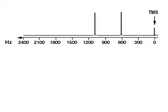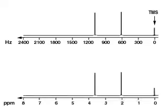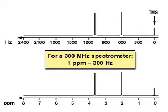The frequency axis relative to TMS spans a few thousand Hz. The peak frequencies relative to TMS are reported in parts per million of the carrier frequency. On a 300 MHz NMR spectrometer, one part per million, or ppm, equals 300 Hz.